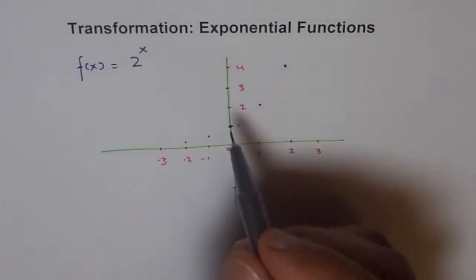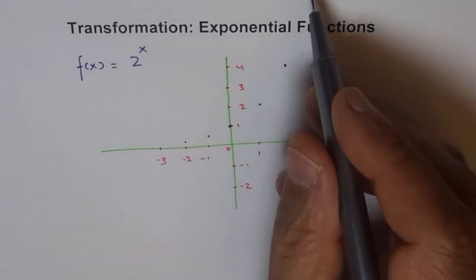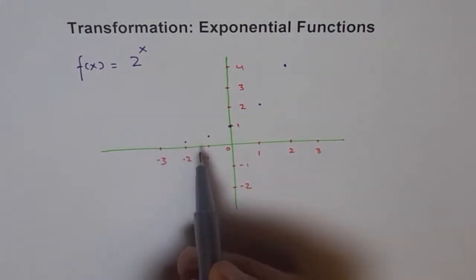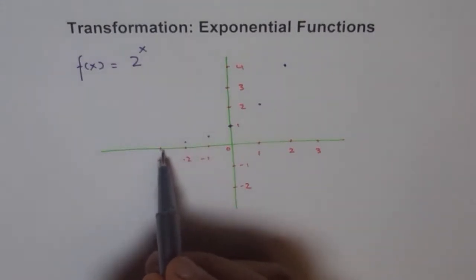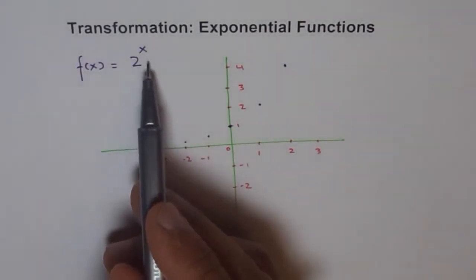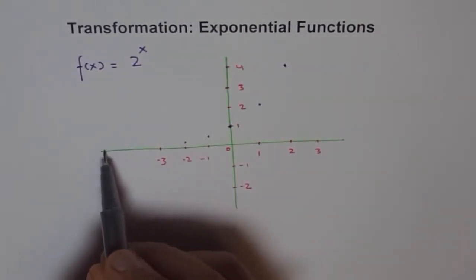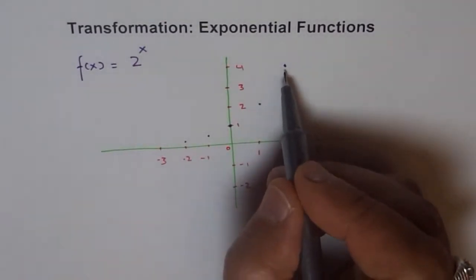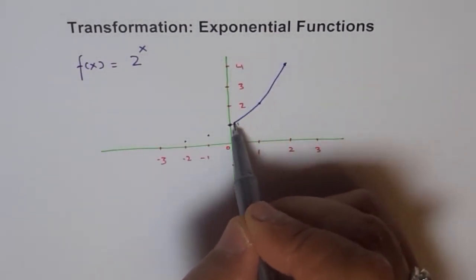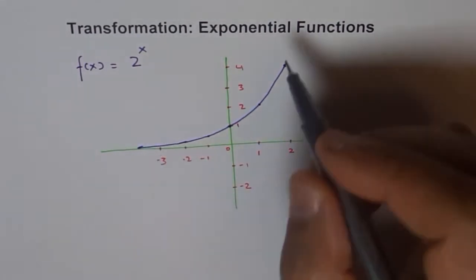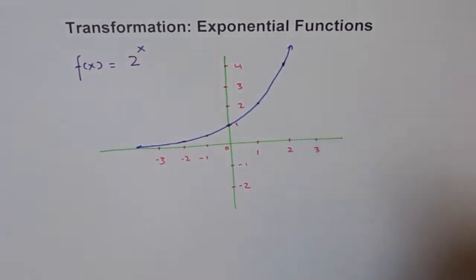As we go higher and higher — for example, at x = 3 it will be 8 — it goes towards infinity. But as we go lower, towards the negative side: at x = -3 it will be 1/8, then 1/16, 1/32 — it comes closer and closer to the x-axis and will never touch it. So we get a graph that approaches the x-axis on the left and approaches infinity on the right.